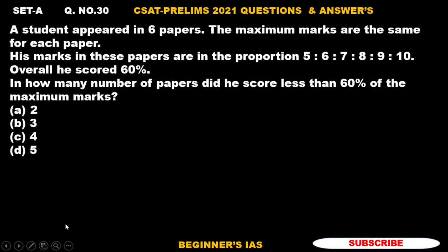In how many number of papers did he score less than 60% of the marks? Options are 2, 3, 4, 5. First of all let us check the solution. Be sure that maximum marks, I am just considering the maximum marks should be 100. So just take maximum marks as 100. If you take maximum marks 100, then for six subjects, the maximum marks are going to be 600.